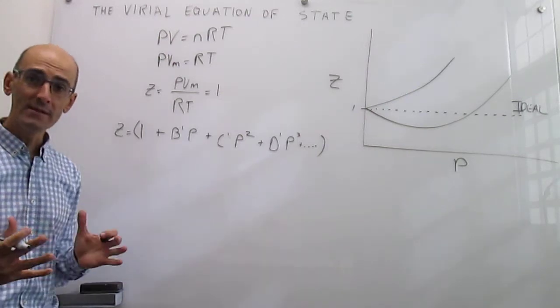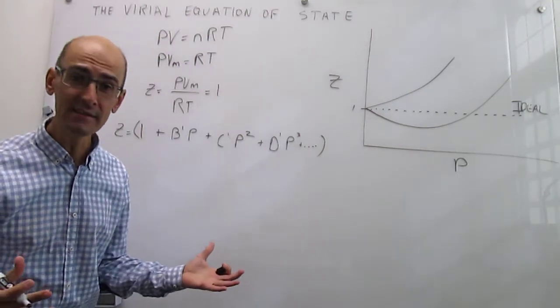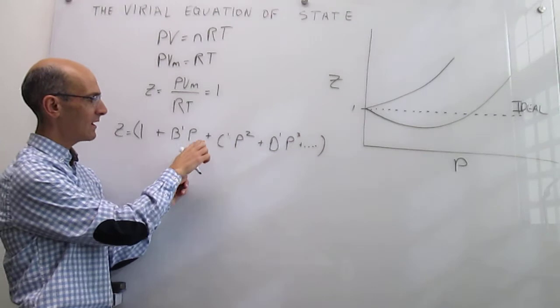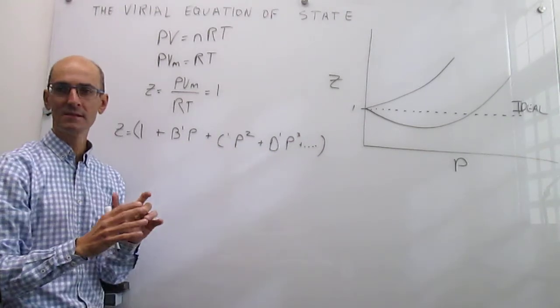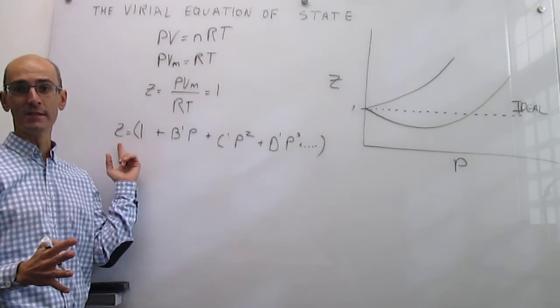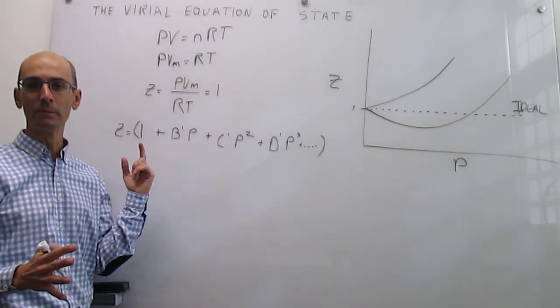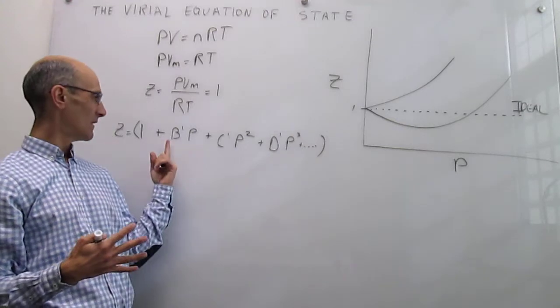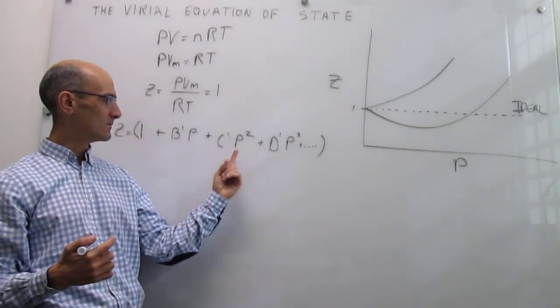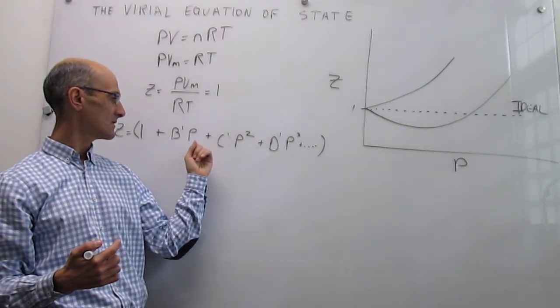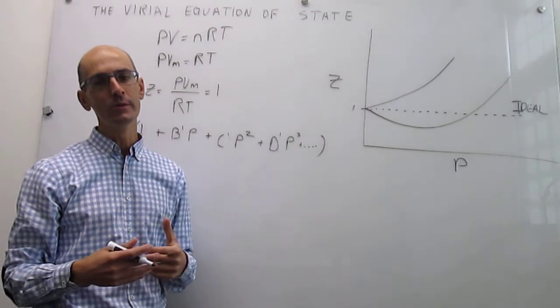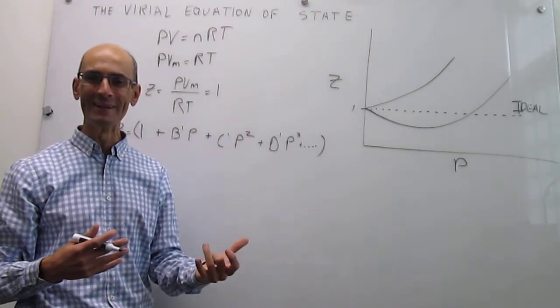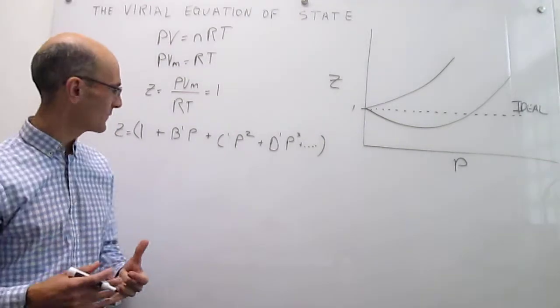So if the gas behaves ideally, it turns out that these B', C', D' constants, all those are zero, and you recover the ideal model Z equals one. But if the gas does not behave ideally, then these values, these constants there, they're going to provide an idea for how far away from ideality you are.